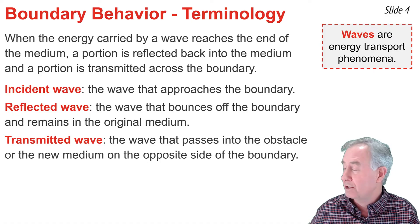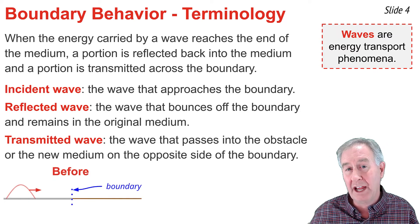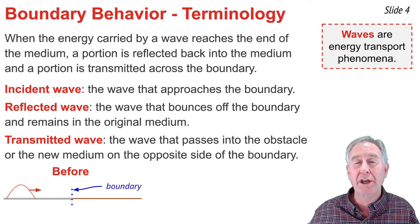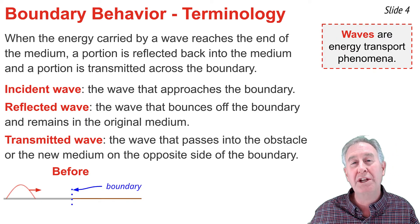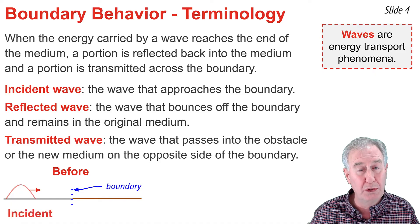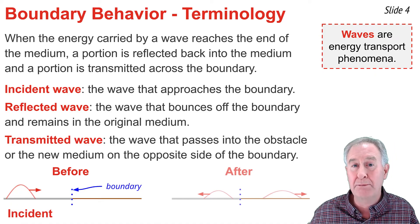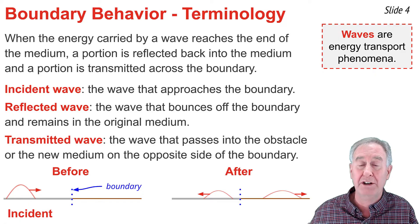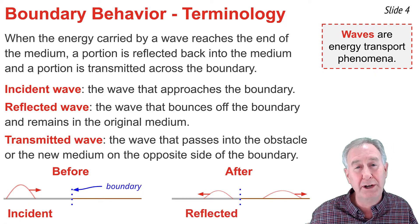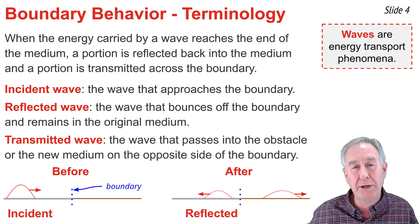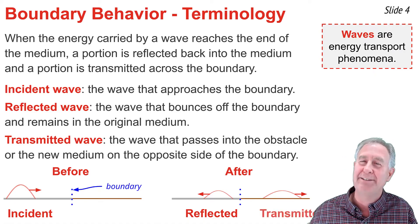To illustrate, consider this diagram of a pulse moving through a medium that is attached to a second medium. We refer to that pulse as the incident pulse. When it reaches the boundary, we will see two new pulses: the reflected pulse, which has bounced off the boundary and remains in the original material, and the transmitted pulse, which is in the new material on the opposite side of that boundary.